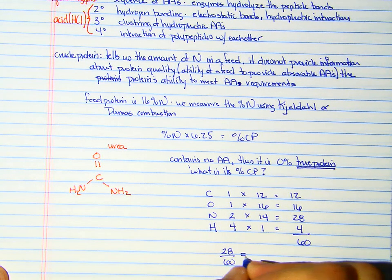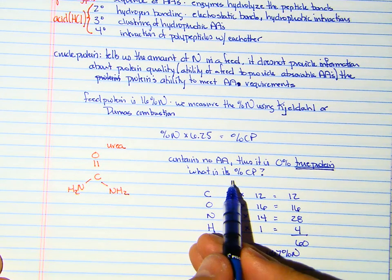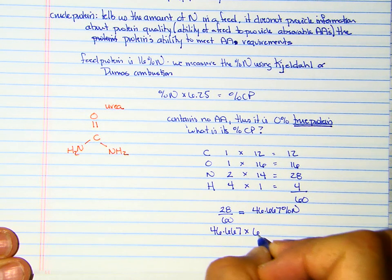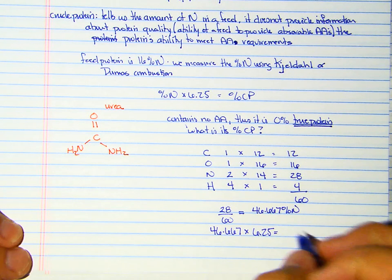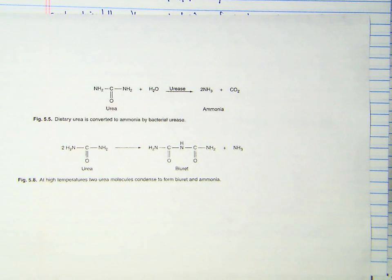I wanted to know the percent crude protein, so I take the 46.667 and multiply it by 6.25. That tells me the percent crude protein of urea is 291% crude protein. Urea seems like a great source of protein if you look at the crude protein value, but its ability to provide amino acids to the animal is essentially zero. It is zero because there are no amino acids. We're going to talk about urea and why we feed it to cattle later. Because the microbes in the rumen can synthesize their own essential amino acids, we can really utilize urea in ruminant nutrition, but we can't utilize urea in non-ruminant nutrition.